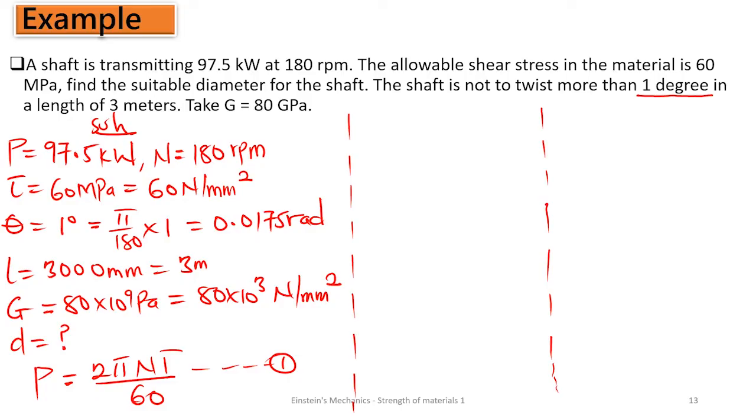If we make the torque the subject, then T equals 60P over 2πN. The torque is 60 multiplied by 97.5 times 10³ divided by 2π times 180.